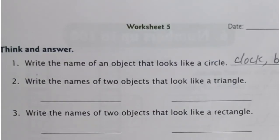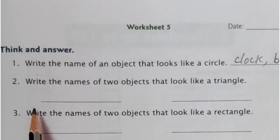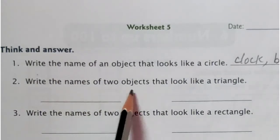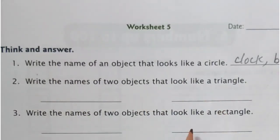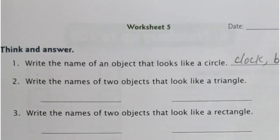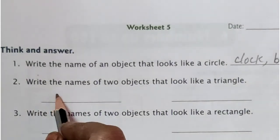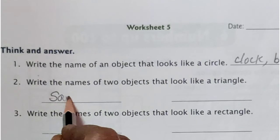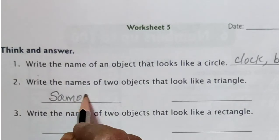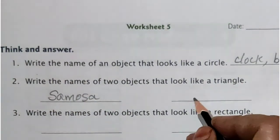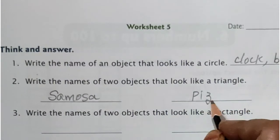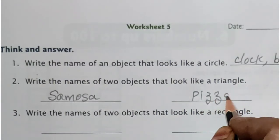Now, let us move on to the second question: write the names of two objects that look like a triangle. So, tell me the names of two objects that look like a triangle. Yes — samosa and pizza. Yes, a piece of pizza.